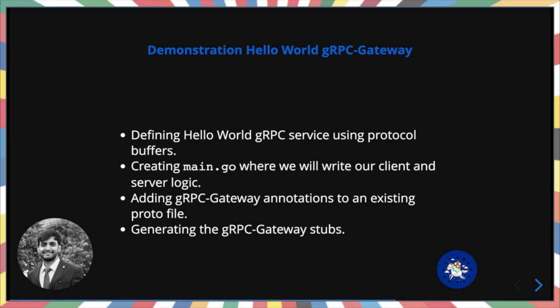When using Protocol Buffers, each RPC must define the HTTP method and path using the google.api.http annotations. We need to add the google/api/http.proto import to the proto file and add the HTTP-gRPC mapping we want. Once we have the gRPC-gateway annotation, we use the gRPC-gateway generator to generate the code, which we can do using protoc or buf.